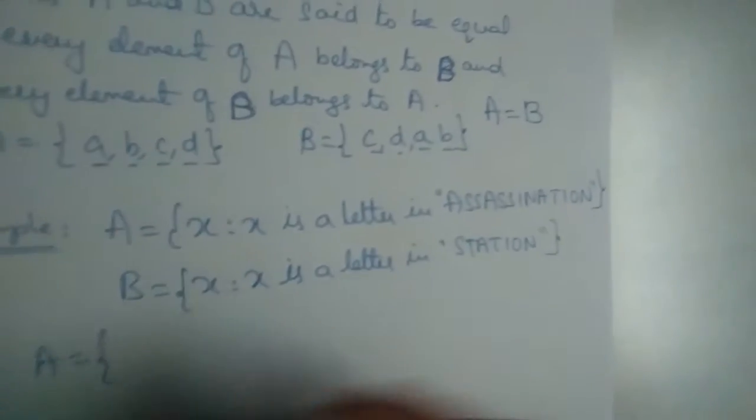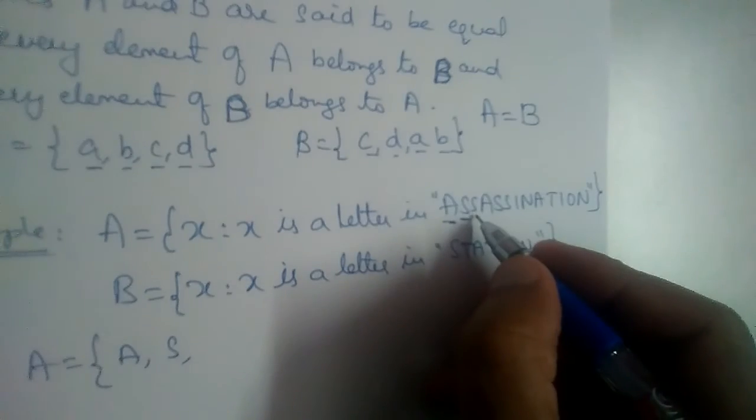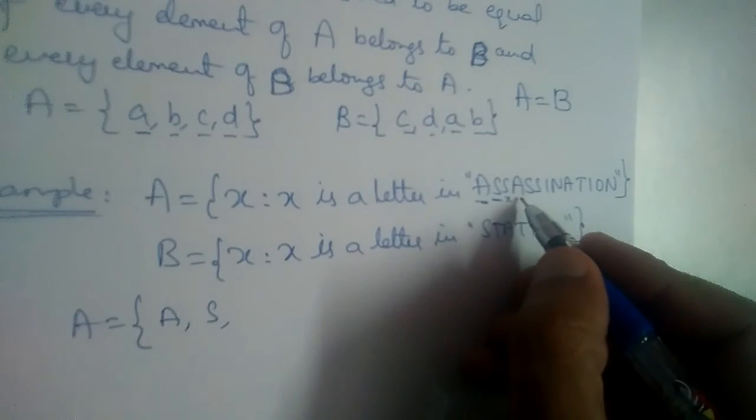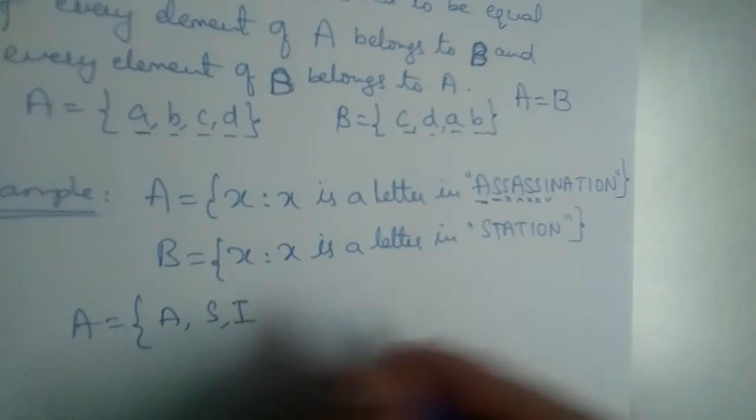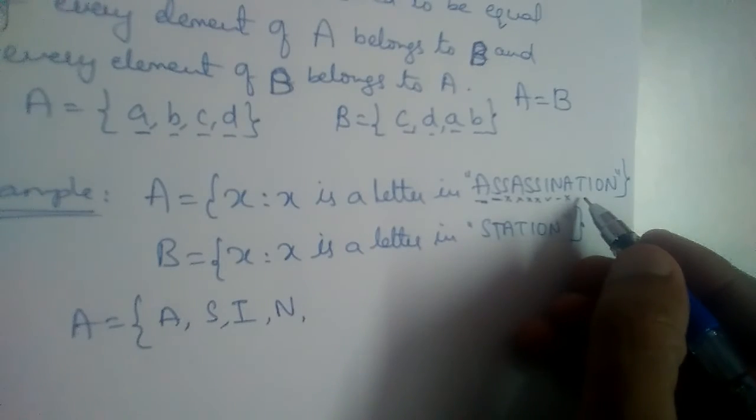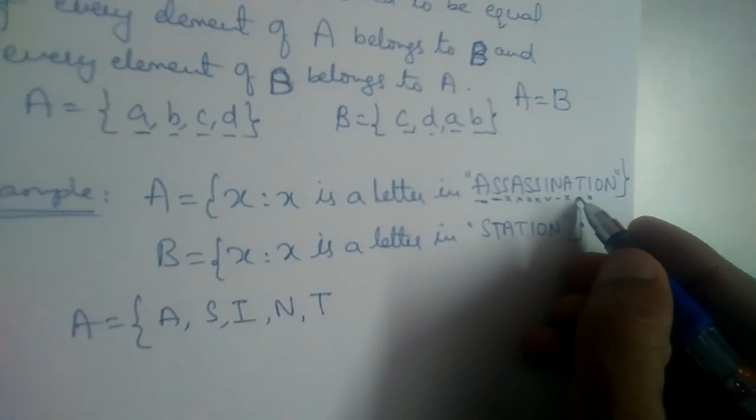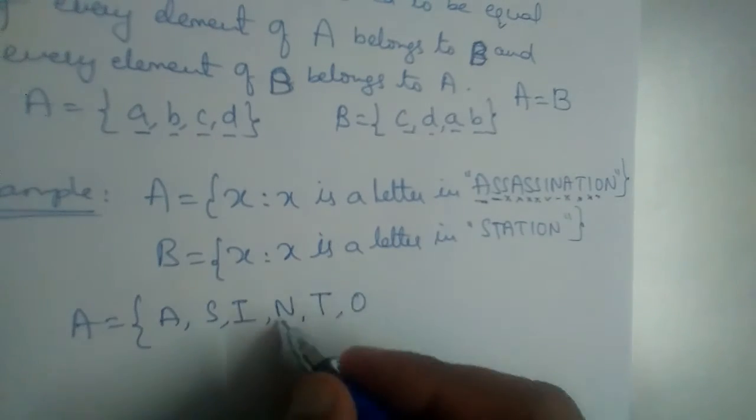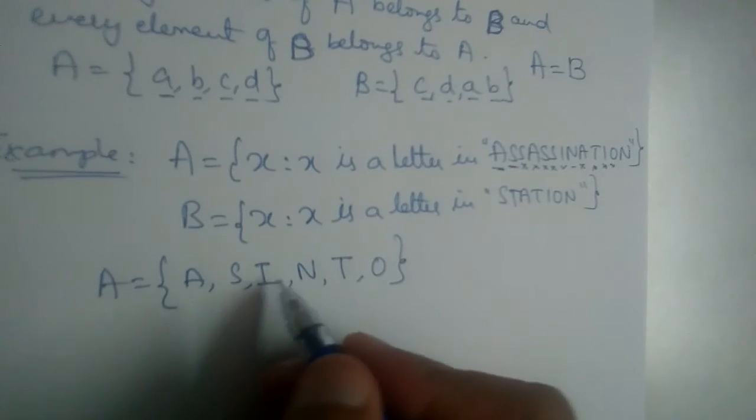So A will be equal to A, S, and S is repeated, right? We should not repeat elements. And A is also repeated, S is repeated, I, I, N, A we already wrote, right? T, I we already wrote, and O. We have to write O, and N we already wrote. So A equals A, S, I, N, T, O.